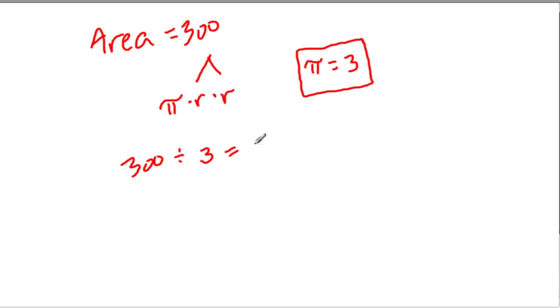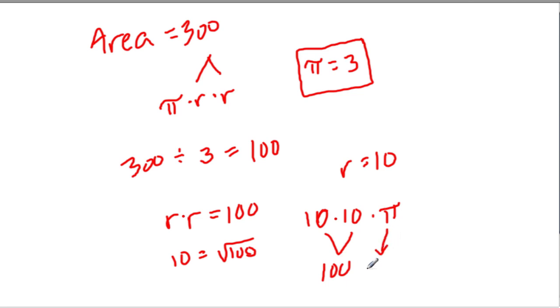Well, we take the square root of 100, and that tells us that the radius is 10. Because 10 times 10 is 100. So let's apply this back into the formula and make sure we're on the right track. If the radius was 10, it would be 10 times 10 times pi. 10 times 10 is 100. Pi we're estimating as 3. So there we go. We get 300.